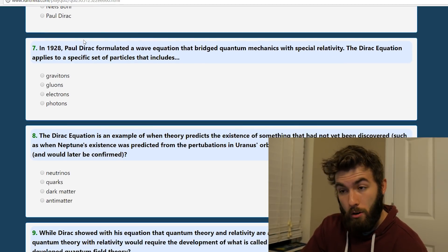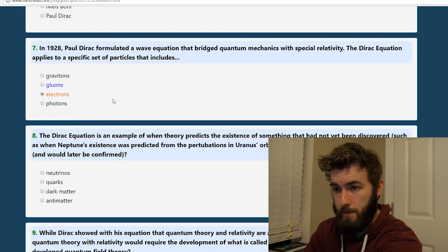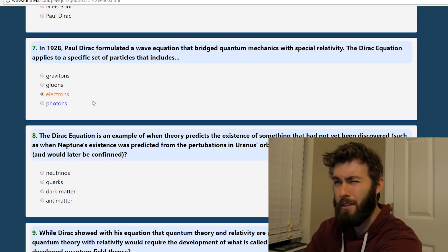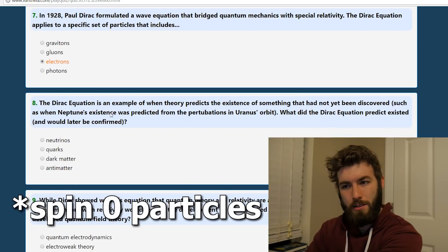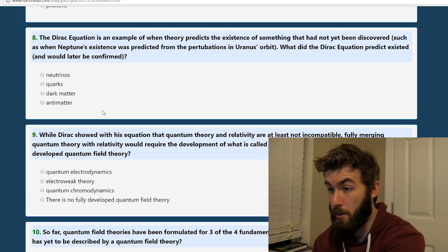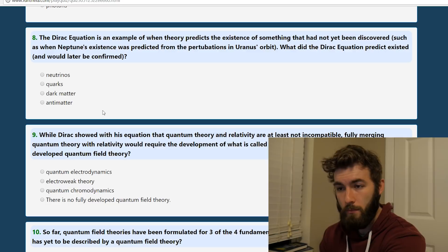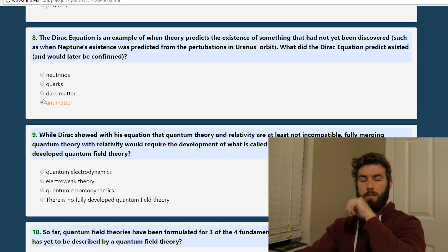In 1928, Paul Dirac, more, okay, Paul Dirac again, formulated a wave equation that bridged quantum mechanics with special relativity. The Dirac equation applies to a specific set of particles that includes, that's going to be electrons. Okay, because I think it was the Klein-Gordon equation that applied to photons. Could be wrong, though. The Dirac equation is an example of when theory predicts the existence of something that had not been discovered yet, as when Neptune's existence was predicted from the perturbations in Uranus's orbit. What does the Dirac equation predict? It is antimatter. Yeah, so the other one had to be electrons.